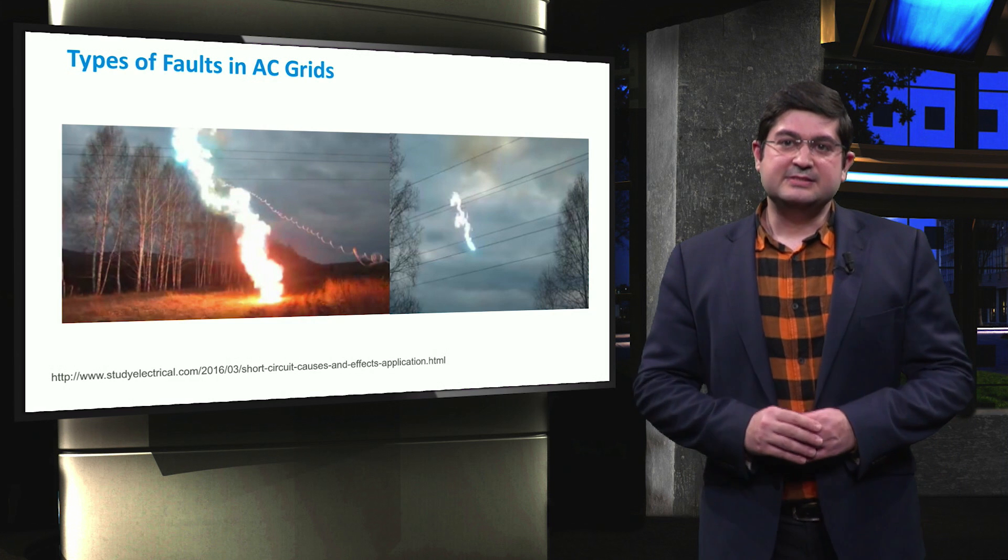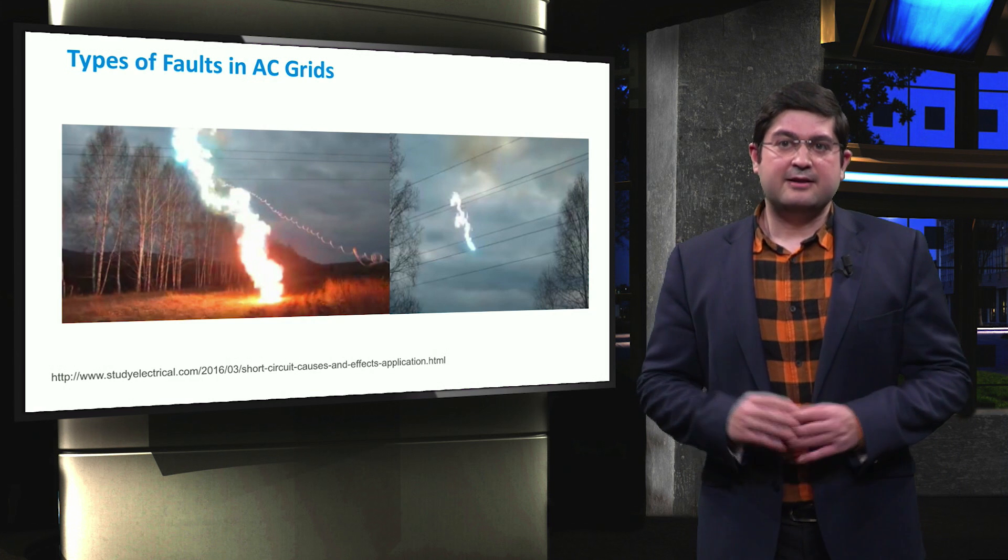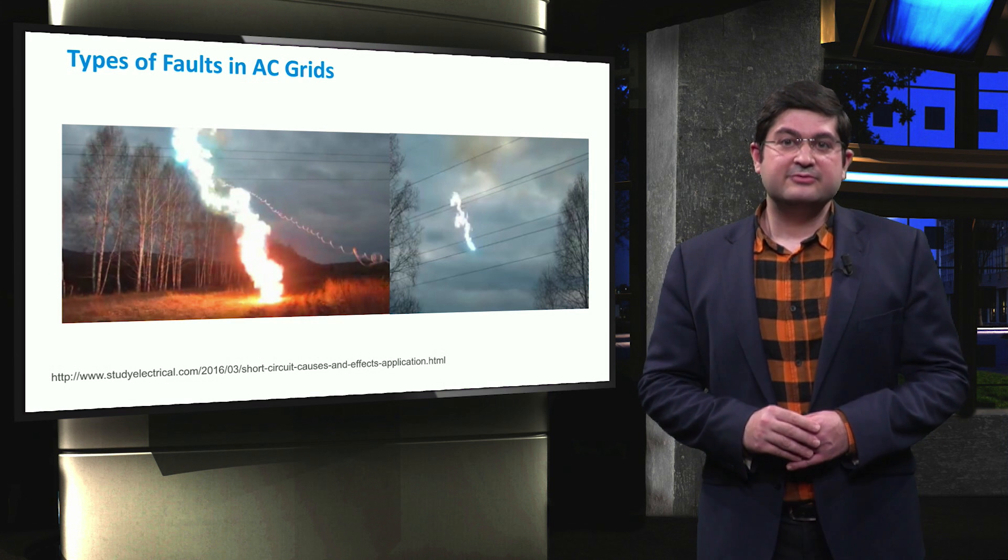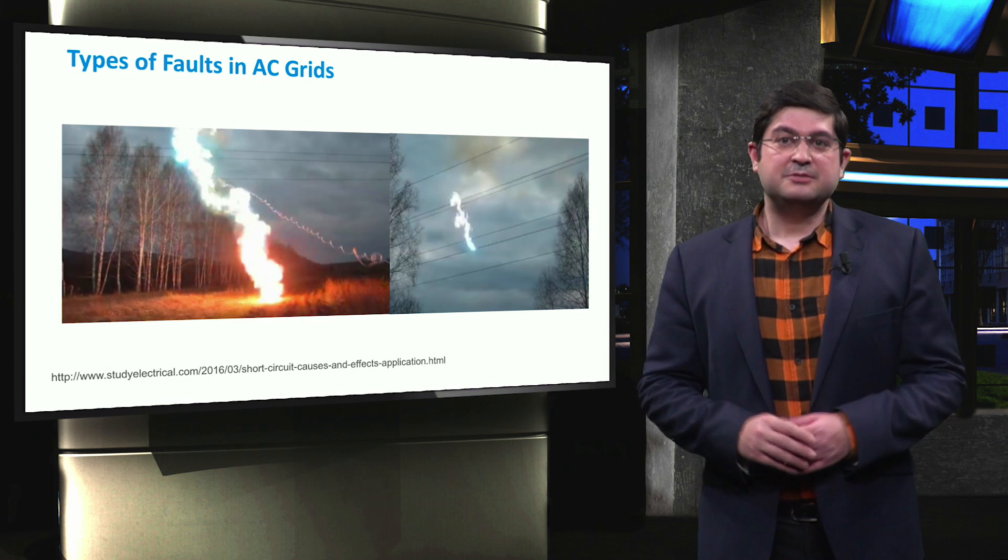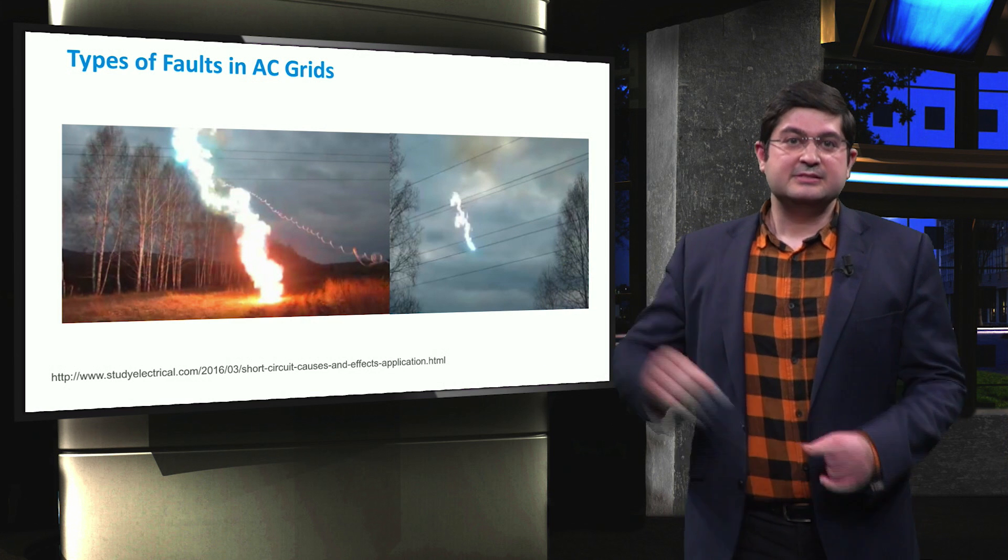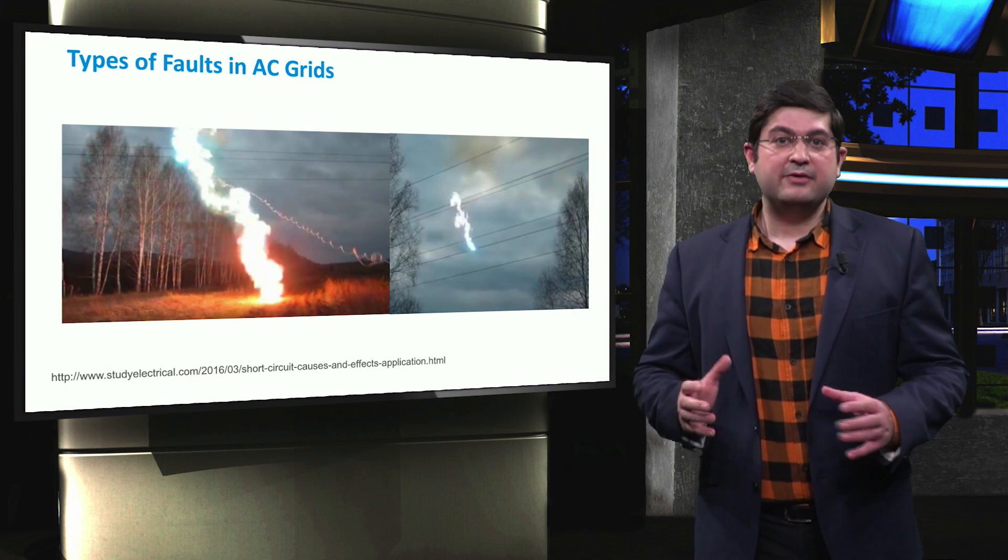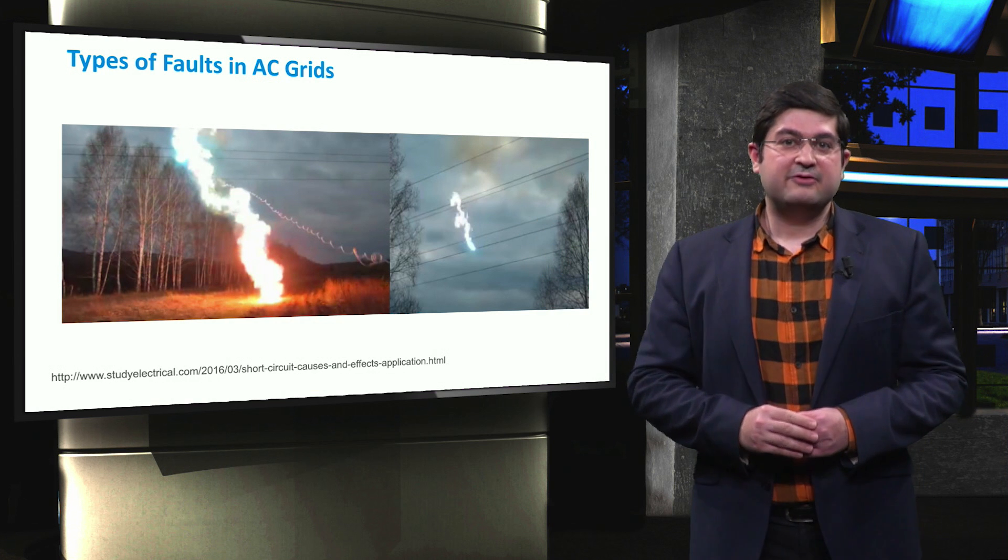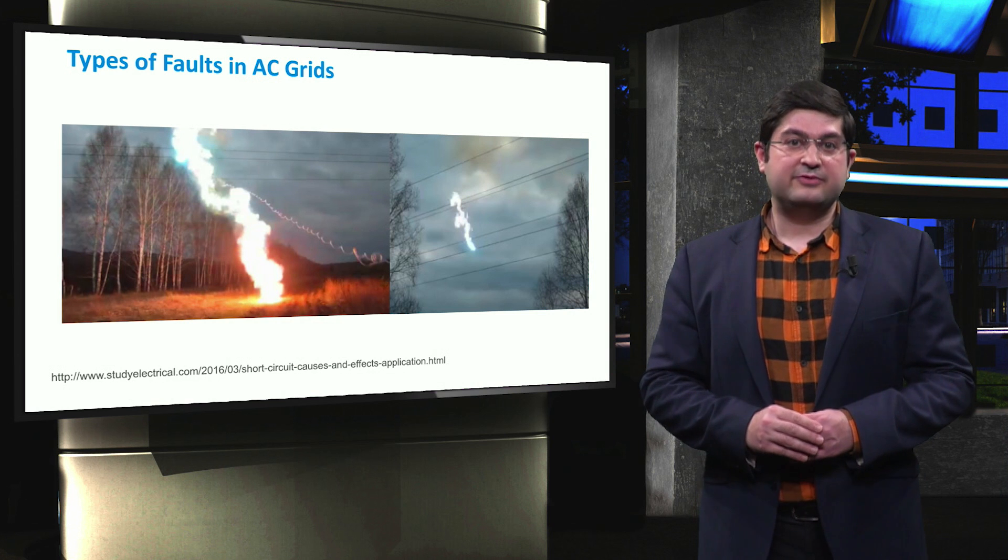In a three-phase system, various types of faults can occur between different phases and the ground. In the photo on the left, we show the arc flash between various phases and the ground in an overhead transmission line. In the photo on the right, we show the arc flash of the fault between two phases.